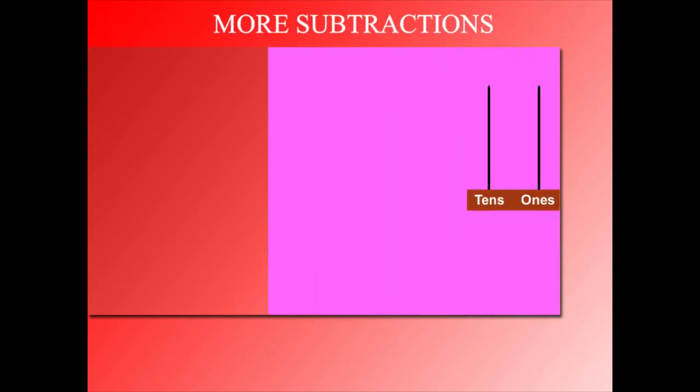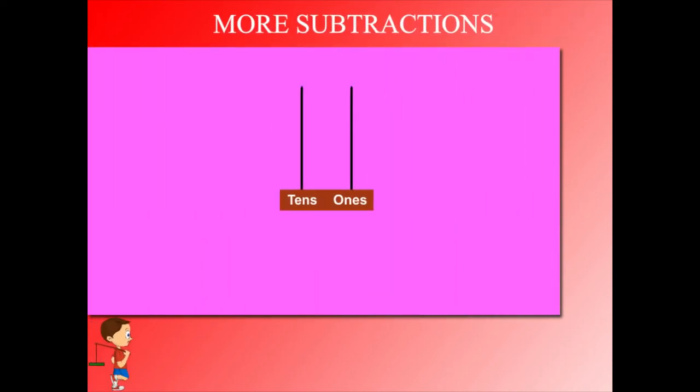More subtractions. Here is an abacus with tens and ones. The tens has 5 beads and the ones side has 6 beads. That makes 56.